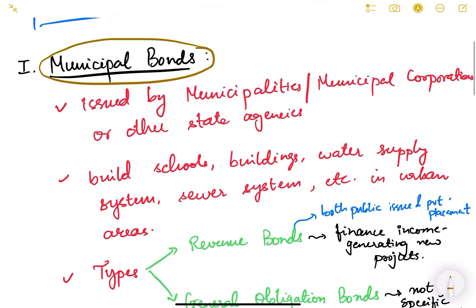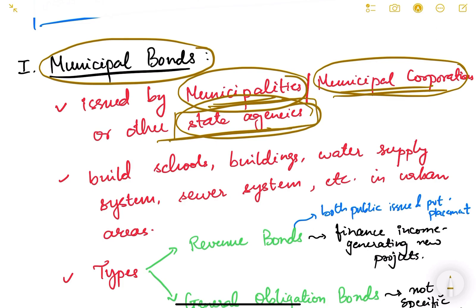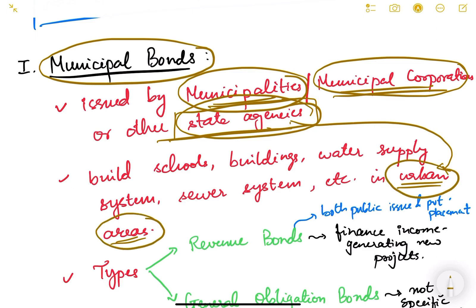Municipal bonds are issued by municipalities or municipal corporations, or other state agencies on behalf of municipalities. They can be issued by municipalities or municipal corporations directly, or by state agencies on behalf of municipality or municipal corporations. If issued by state agencies, they are still called municipal bonds, as long as they are for work in urban areas — meaning cities.